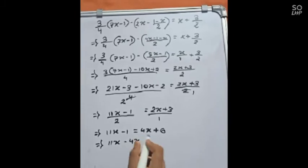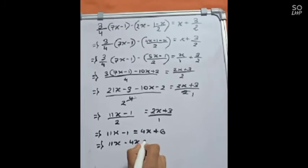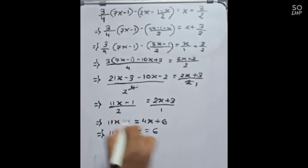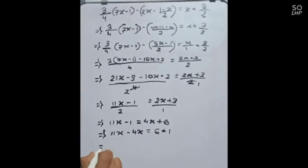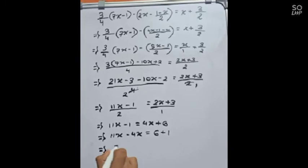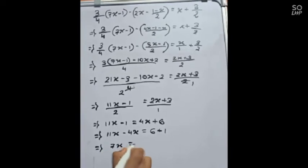We are taking 4x to this side, so its sign will change. And we will take 1 to this side, so its sign will also change. Equals to 7x equals to 7.